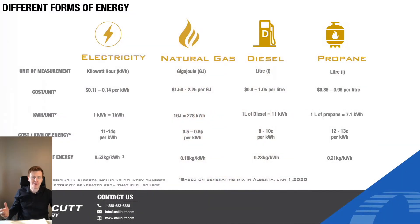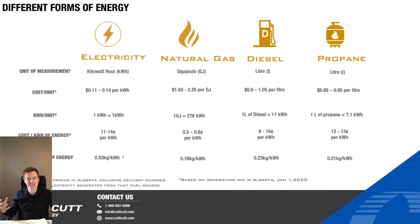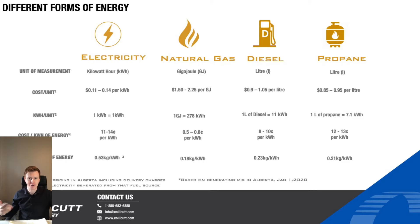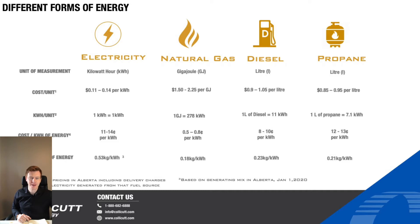You'll see on the screen that there are four different types that we're going to compare. First is electricity, and we're looking at this from the perspective of Alberta — Alberta costs and Alberta CO2 output per kilowatt hour. These numbers are very much indicative of other areas and jurisdictions, and they can easily be changed if you're interested in seeing what it's like for California or upstate New York or anywhere like that. We can absolutely update them and send them over to you. But we're comparing them against natural gas, diesel, and propane.